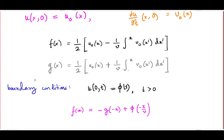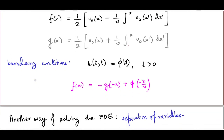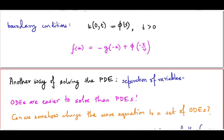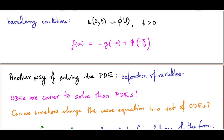In today's lecture we will look at an entirely different way of solving the one-dimensional wave equation. This is a very standard method for handling many partial differential equations, and it is called the separation of variables. The reason for this name will be clear as we proceed. The key observation is simple: ordinary differential equations are easier to solve than partial differential equations. So our aim is to change the PDE we want to solve into one or more ODEs.